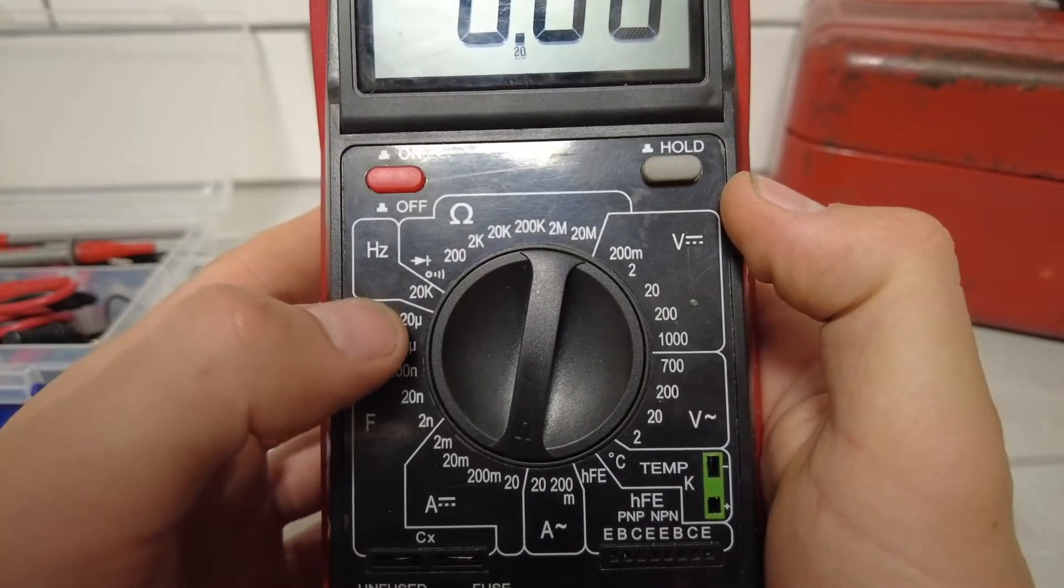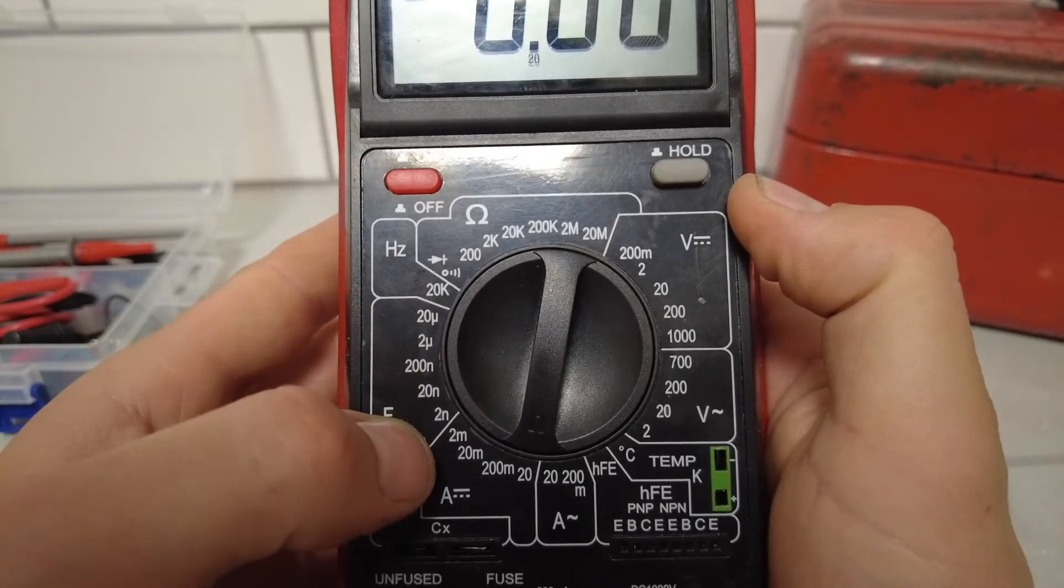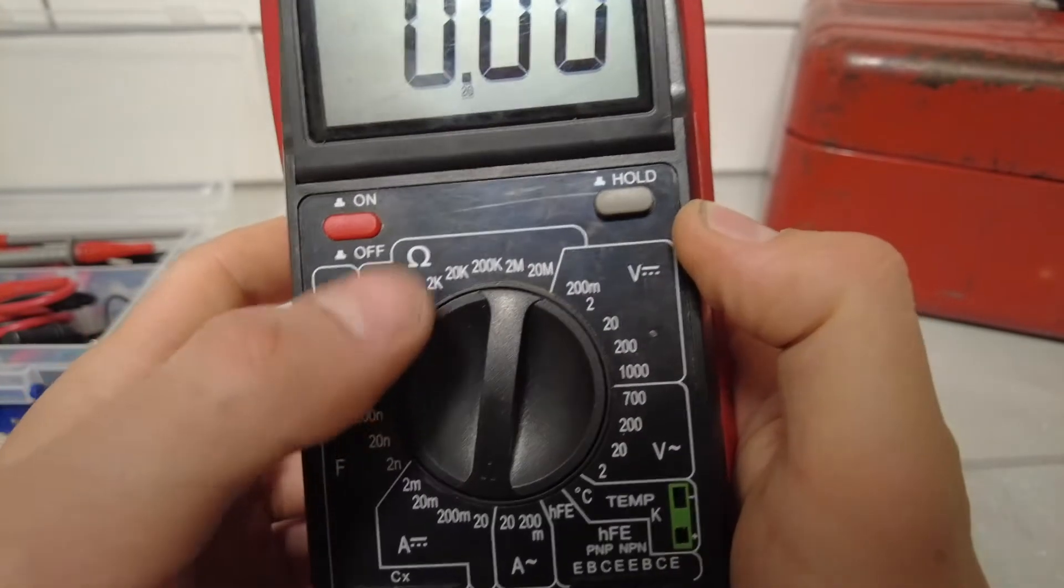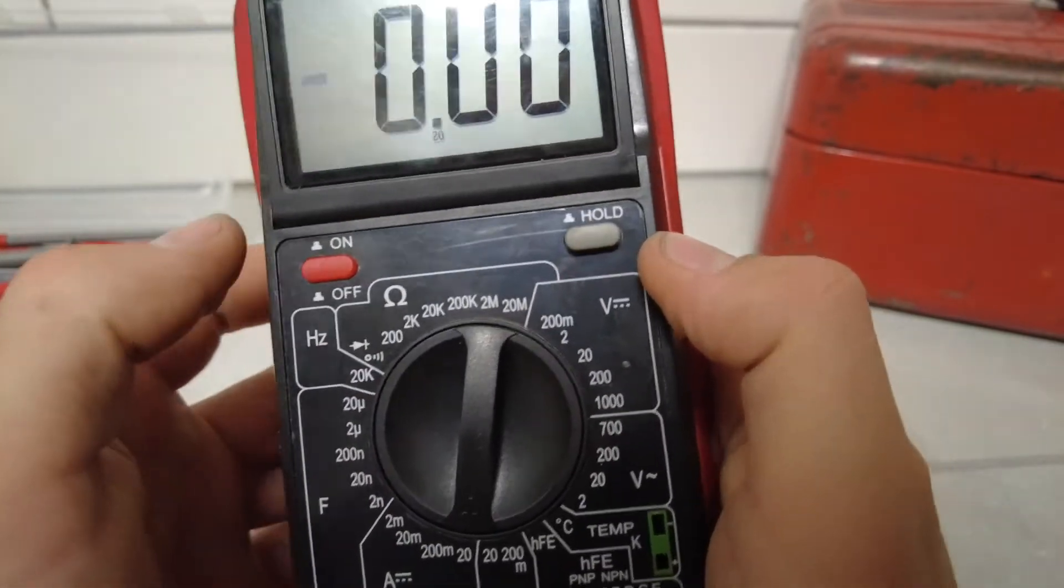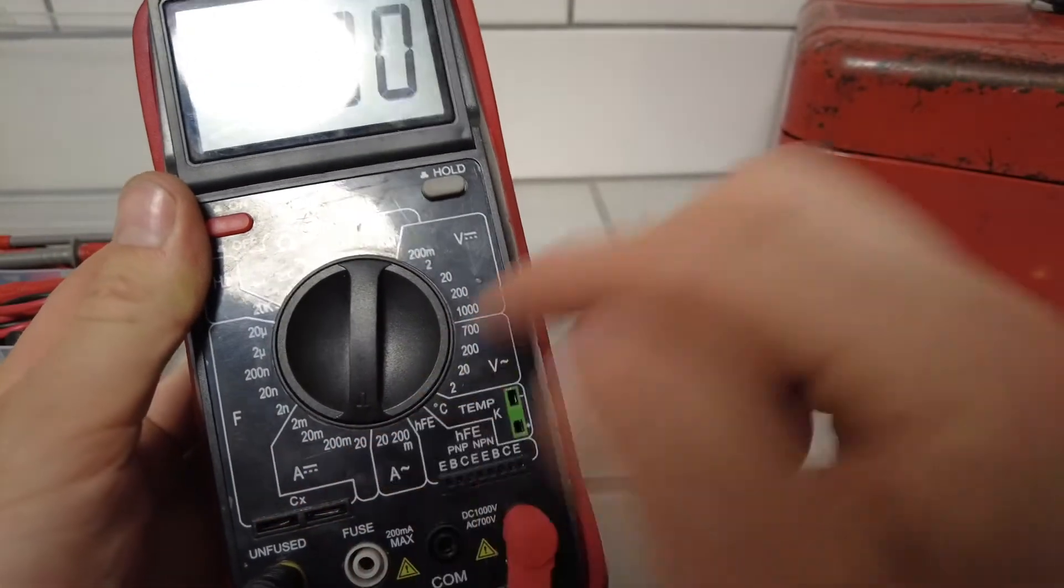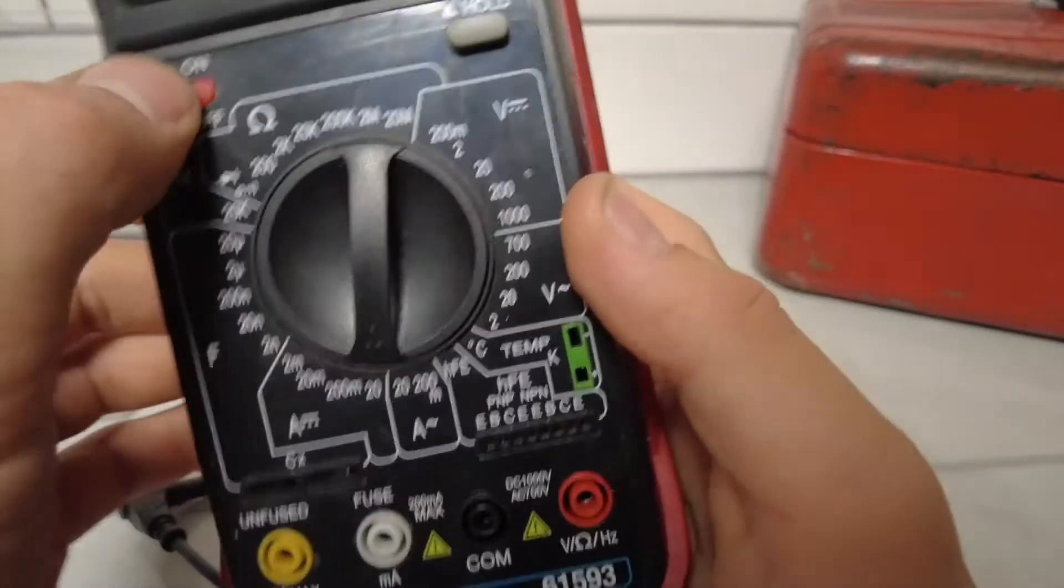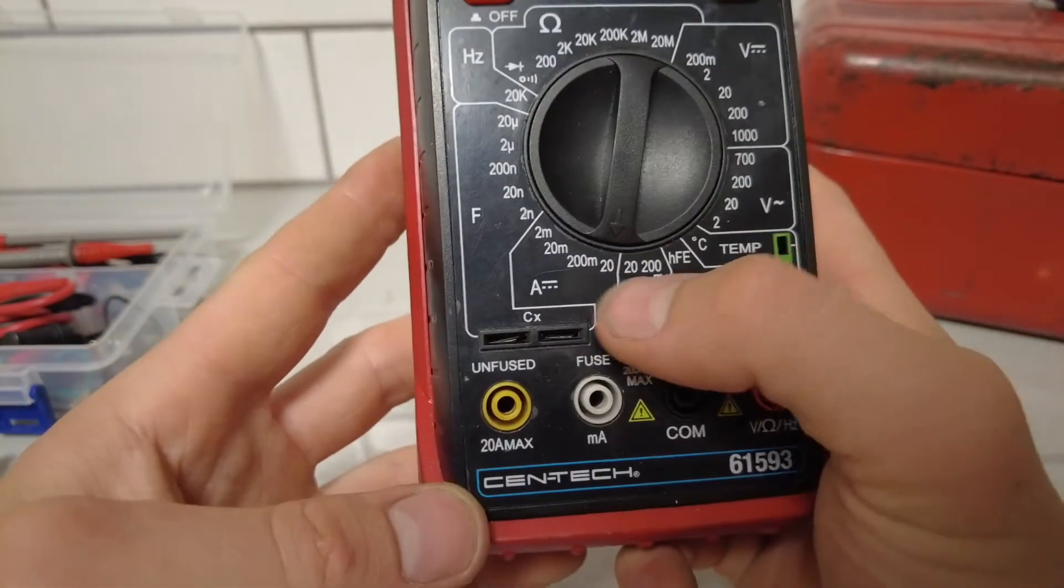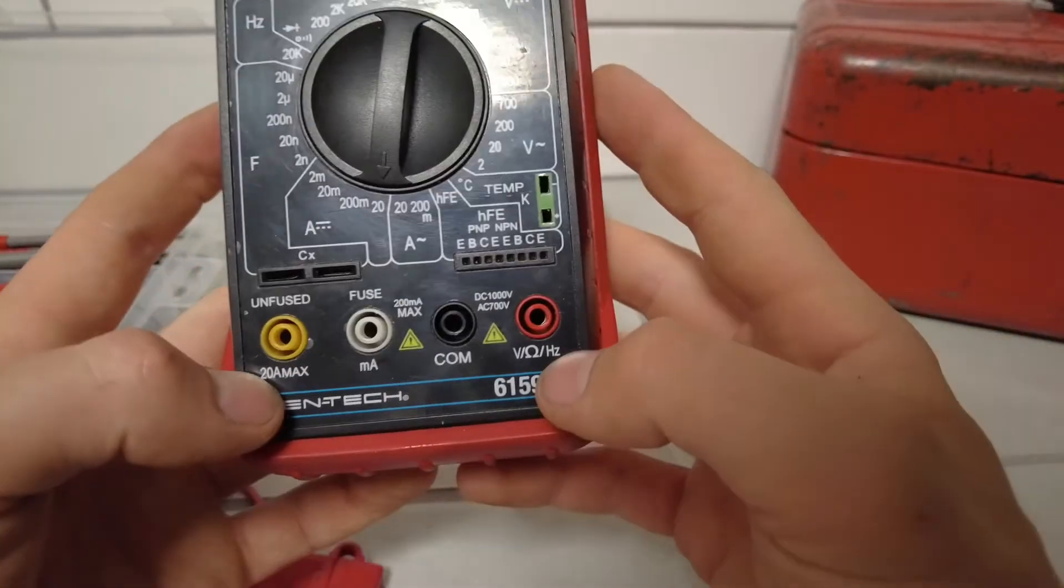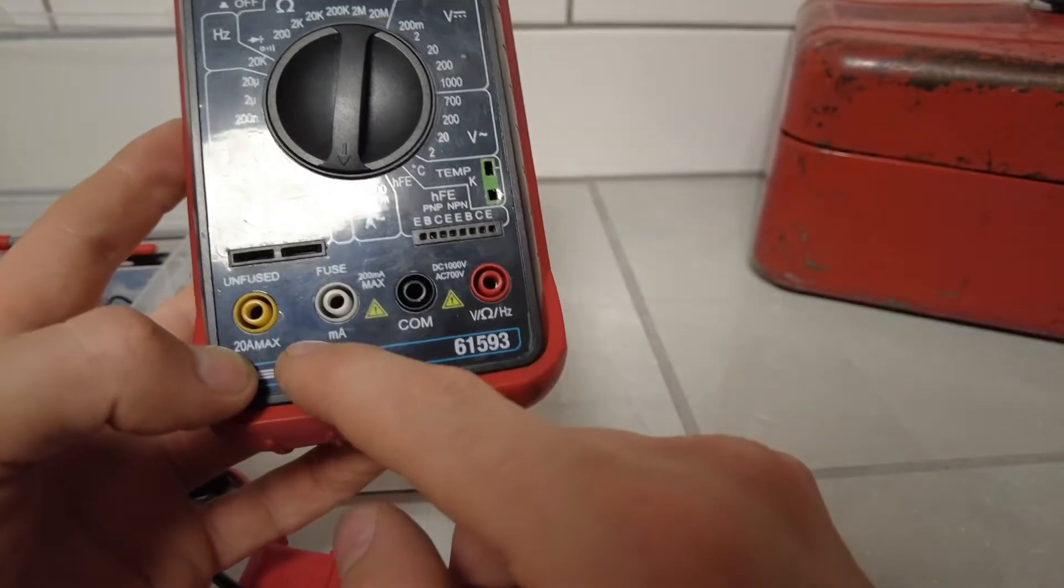Then this is for testing capacitors, the frequency section, and your continuity section. Mainly what I use on here is continuity, volts, and amps. Down here you've got your 20 amp fused section that you're going to use when you're seeing how many amps you are drawing. Then you've got your common positive lead and when you're testing milliamps.